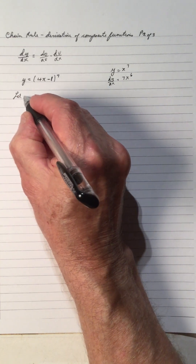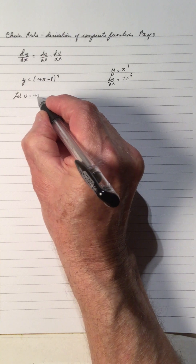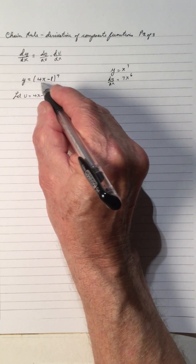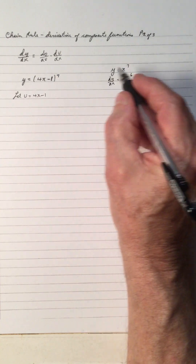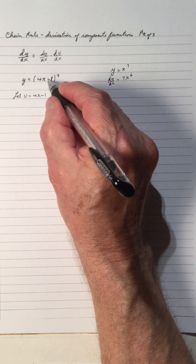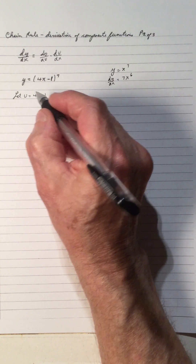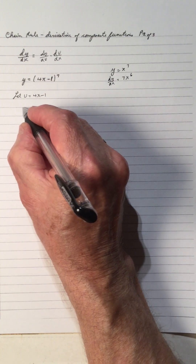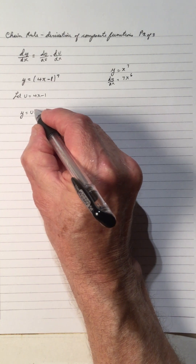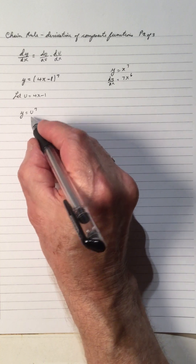Let's let u equal 4x minus 1 — that's the binomial inside. So replacing x with 4x minus 1, we let u equal 4x minus 1, and now we have y equals u to the 7.